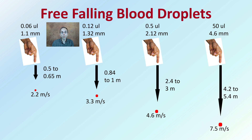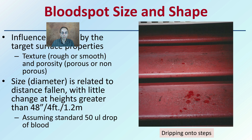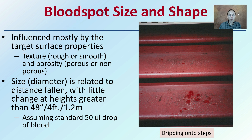Typically when observing a crime scene, you're only going to be left with the end result. So you've got to think about what may have occurred to develop that type of result. Looking at droplet size and shape is important, and it is influenced mostly by the target surface properties. Understanding what that blood came in contact with is crucial to developing a full understanding.